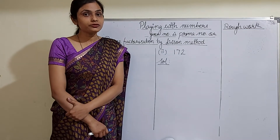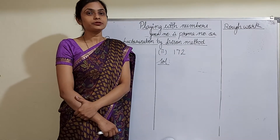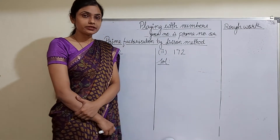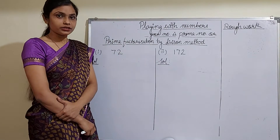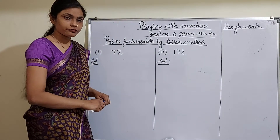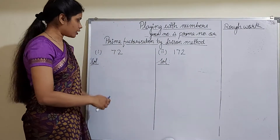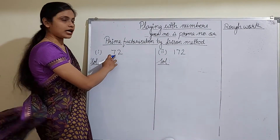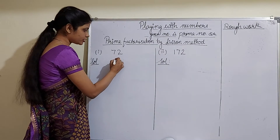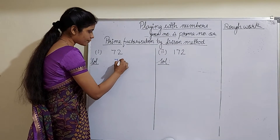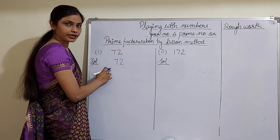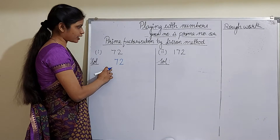It means we are finding out its prime factors first. So let us solve this — see it very carefully. This is our number, that is 72. First example: let us find out the prime factors.